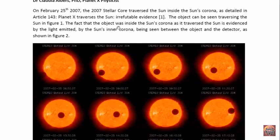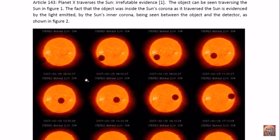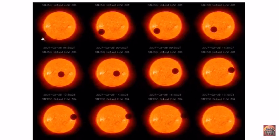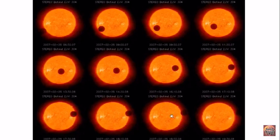Now the fact that this object was inside the sun's corona as it traverses the sun is evidenced by the light emitted by the sun's corona being seen between the object and the detector. We can see that the object looks red, not black, although it looks black here at the edge before it enters the corona. And we can see that there is light being emitted by the corona on the back side that is between the object and the detector.